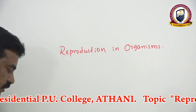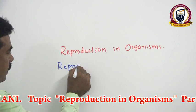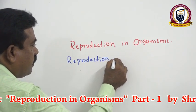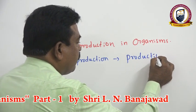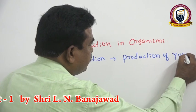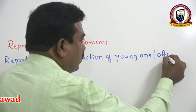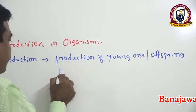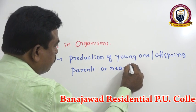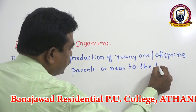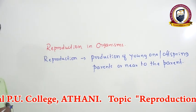First we should know what we mean by reproduction. It is a biological process where there is production of a young one, or offspring, that is the same as the parent or near to the parents. This biological process we call reproduction.